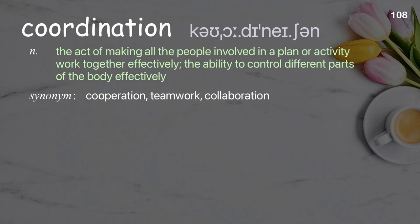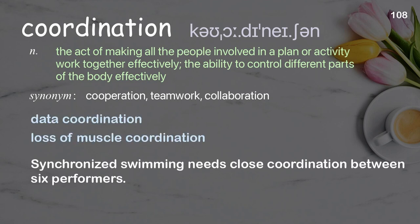Coordination: The act of making all the people involved in a plan or activity work together effectively; the ability to control different parts of the body effectively. Examples: Loss of muscle coordination. Synchronized swimming needs close coordination between six performers.